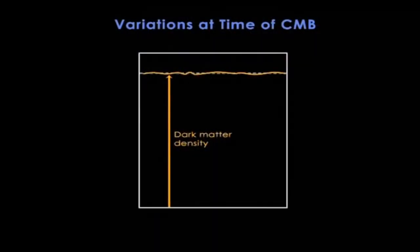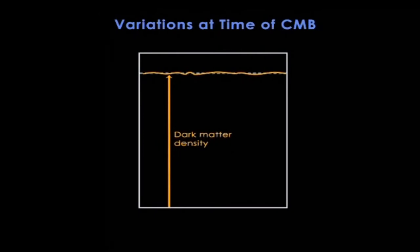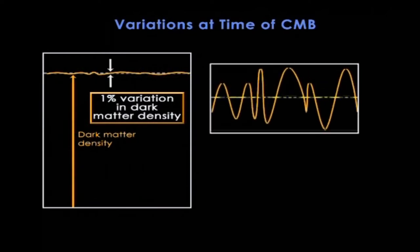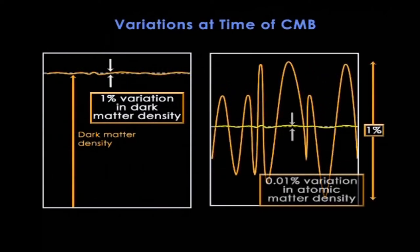Let's begin about 400,000 years after the Big Bang, roughly when the microwave background was made. This diagram shows just how smooth the universe was at that time. The orange curve is for dark matter, and it varies by about 1% above and below the average. But the atomic matter is much smoother — 100 times less rough than dark matter, about a hundredth of 1%. That's equivalent to the difference in atmospheric density between your feet and your head.